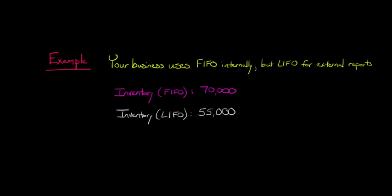So we're going to say, what is your inventory under FIFO? Well, we just talked about how it's going to be higher typically. So let's say that it's $70,000. That's your inventory computed according to FIFO. Now we say, what's the inventory under LIFO? Well, that's $55,000, let's say in our example.